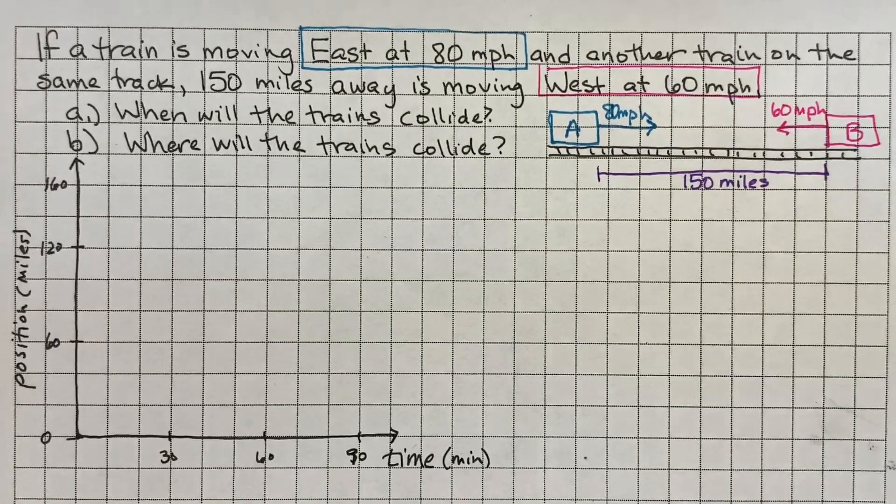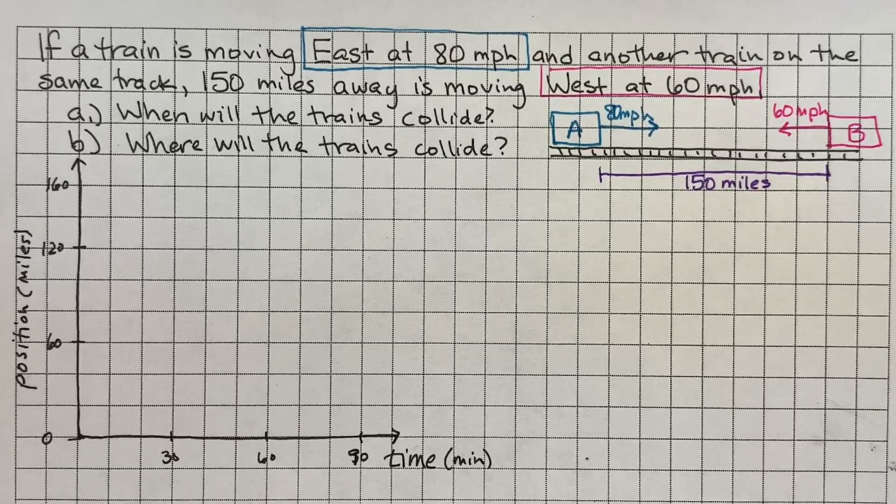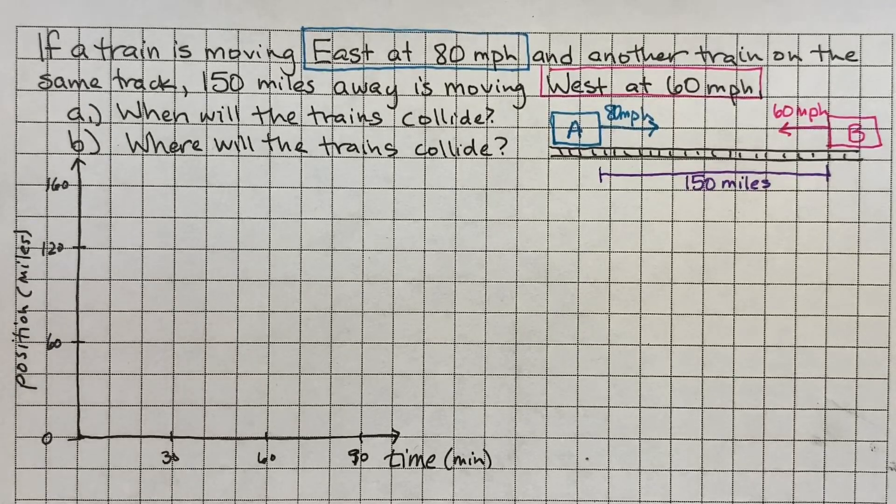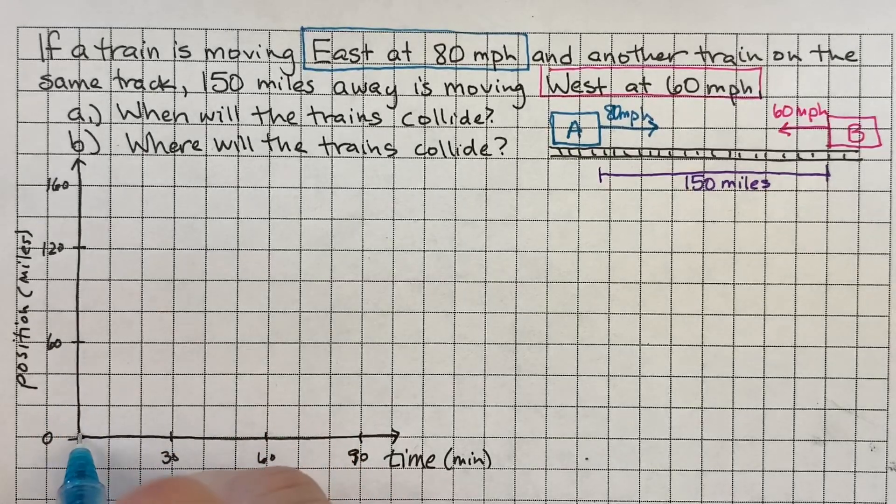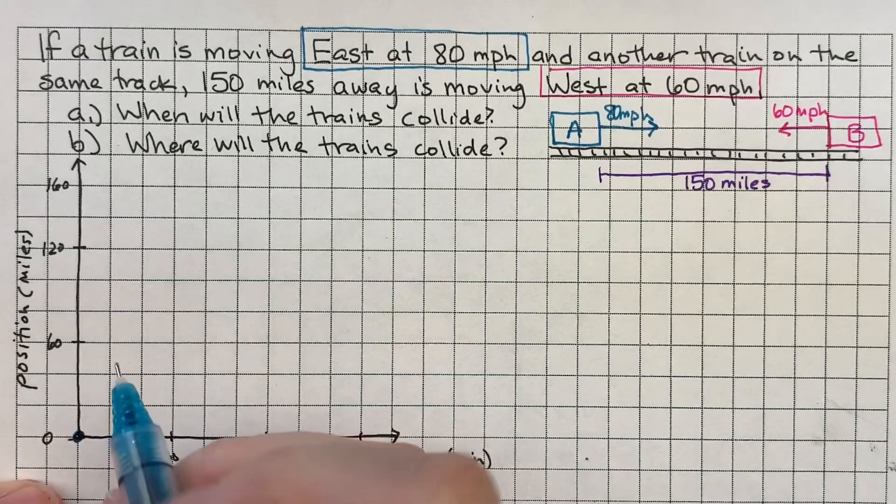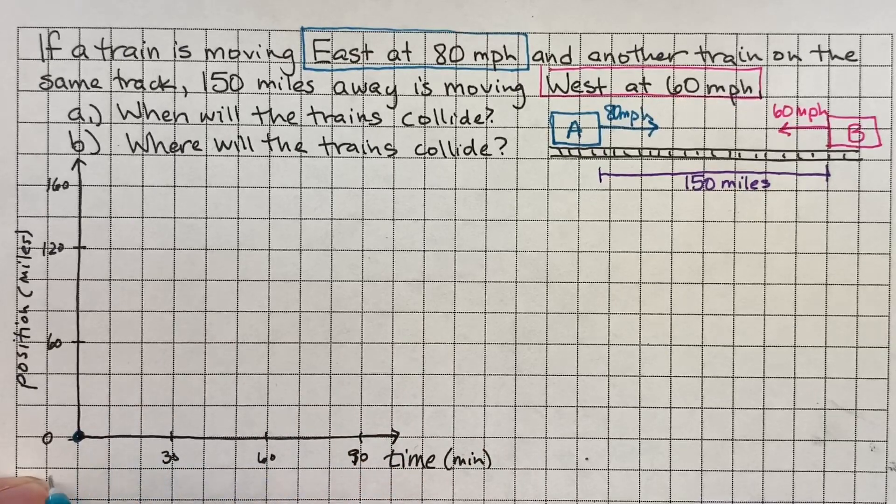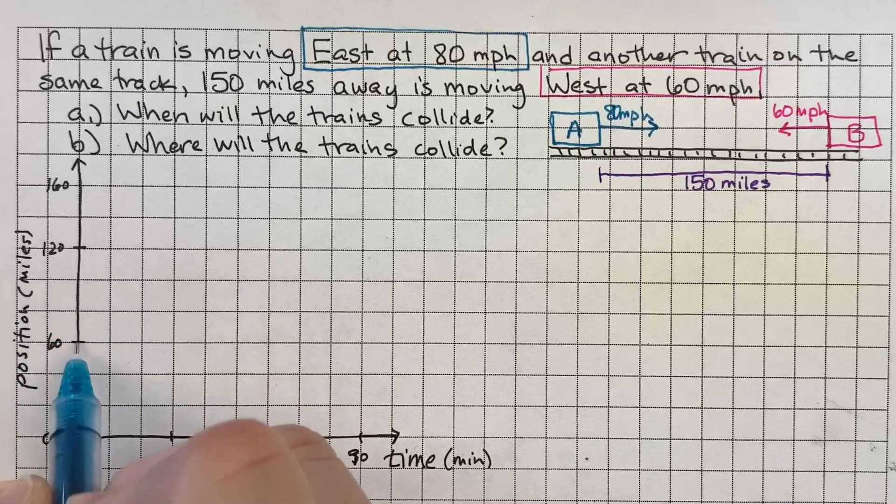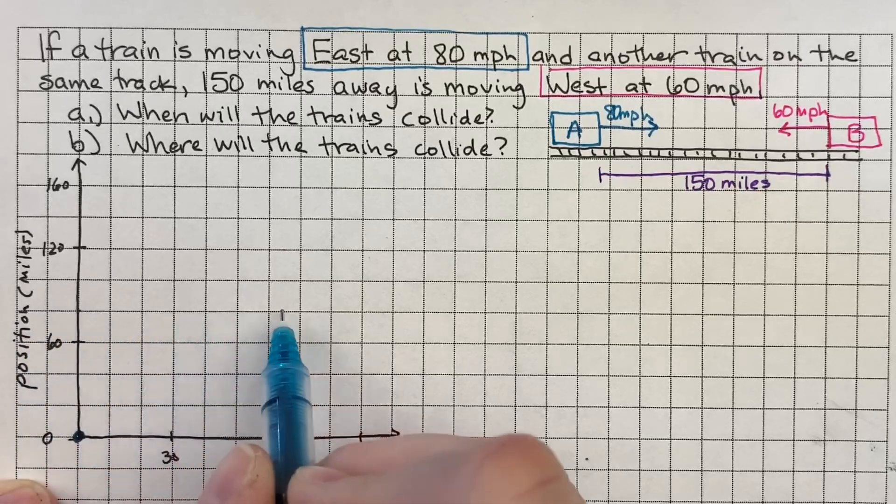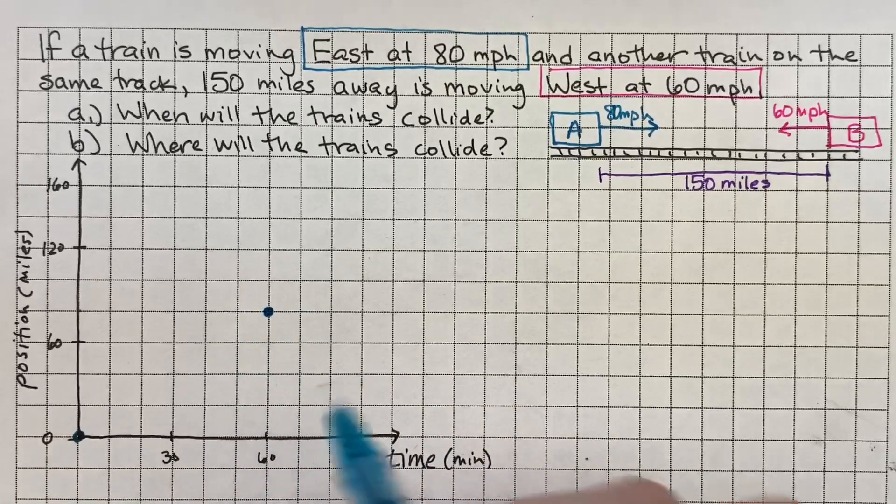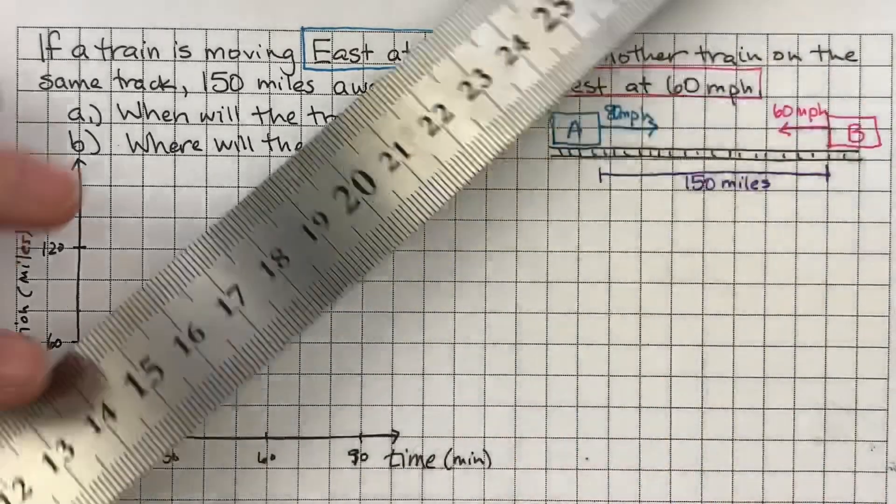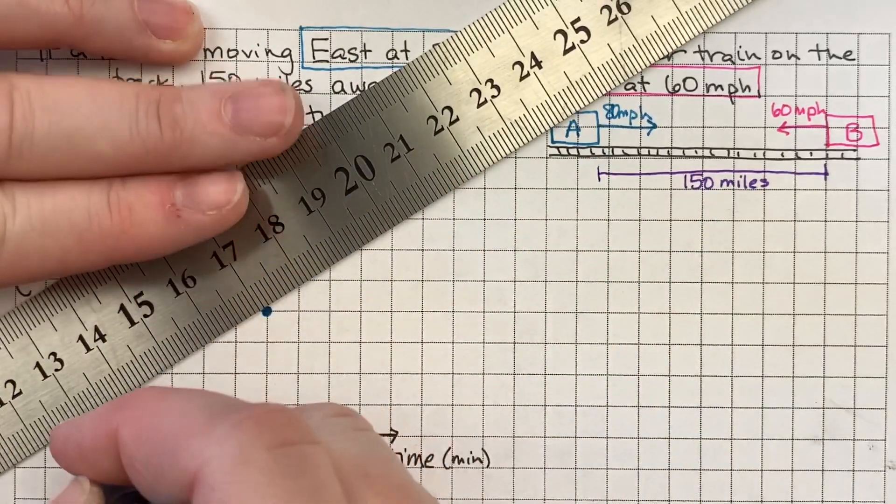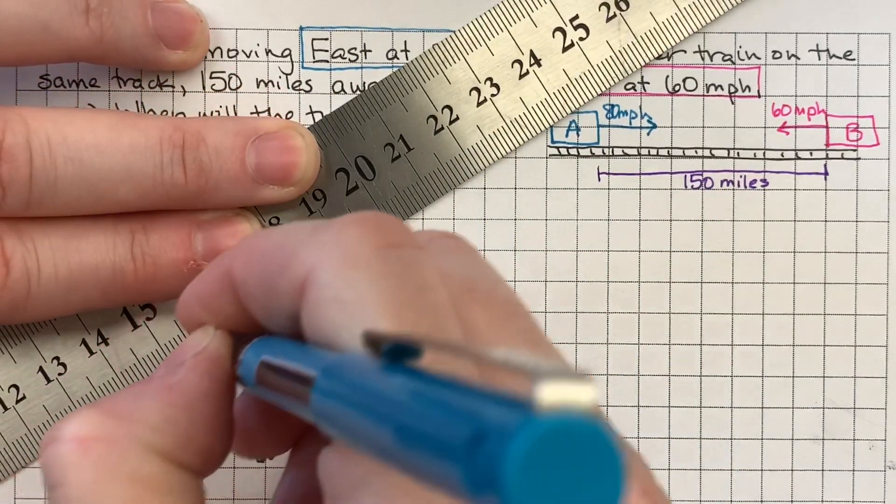So we're going to randomly decide which train is at the origin. And just because train A is on the left of my drawing, I'll go ahead and put train A at the origin. And then I know it needs to go 80 miles in every hour. So this is 80 miles in the first hour.